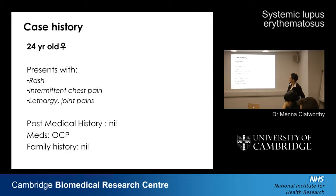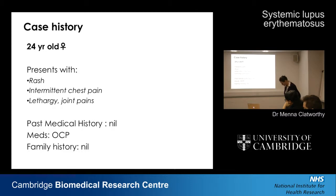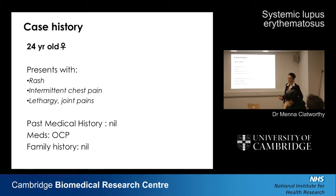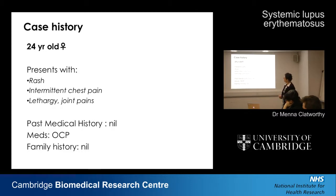This is a 24-year-old lady who presented with a rash, principally across her face but also on the back of her hands — sun-exposed areas. She'd had some intermittent chest pain which she described as sharp. In medicine, sharp chest pain that's worse when you breathe in is called pleuritic chest pain, and it usually means there's some inflammation in the pleural membranes — pleurisy.